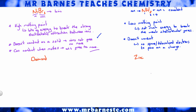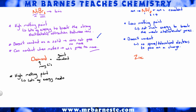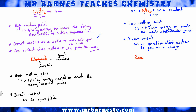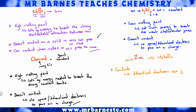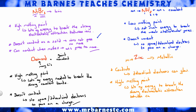Diamond is made up of many carbons — giant covalent — therefore high melting point because lots of energy is needed to break those strong covalent bonds. Diamond doesn't conduct because there are no spare or delocalized electrons to pass on a charge. Zinc is a metal — metallic bonding — therefore it conducts because delocalized electrons can flow, has a high melting point because lots of energy is needed to break the strong electrostatic attraction between cation and delocalized electron, and is malleable because layers can slide past each other without breaking the metallic bond.